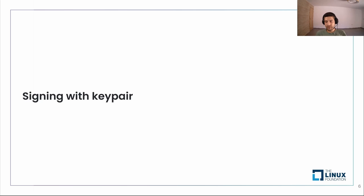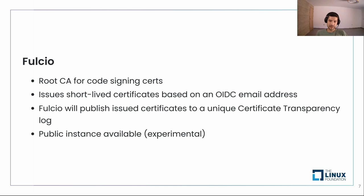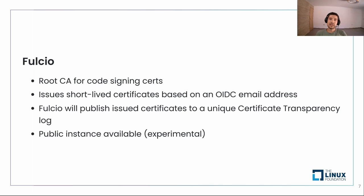Before we go into keyless mode, let me introduce two more tools that come with Sigstore. The first one is Fulcio. Fulcio is the root certificate authority that issues a certificate we will use for signing our artifacts. It issues a short-lived certificate — valid for under 20 minutes — and it's based on our OIDC email address.